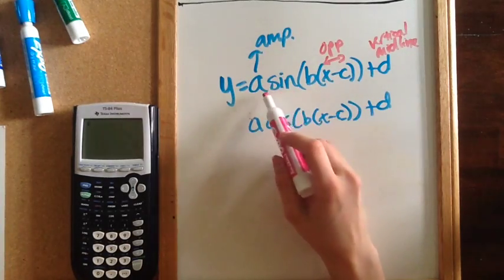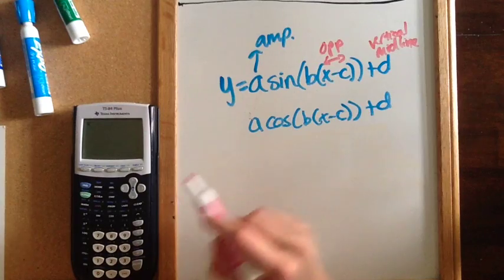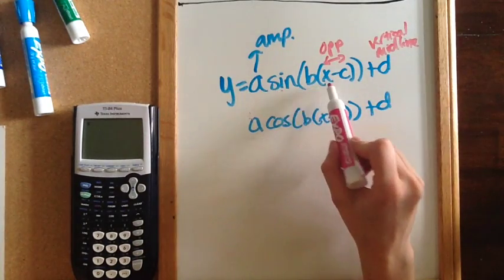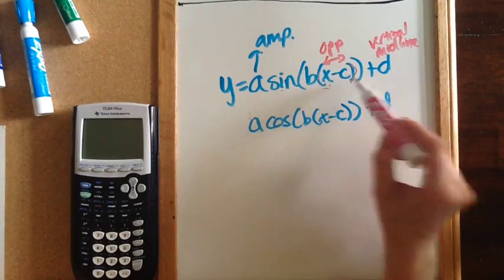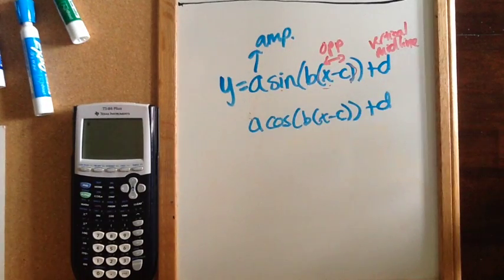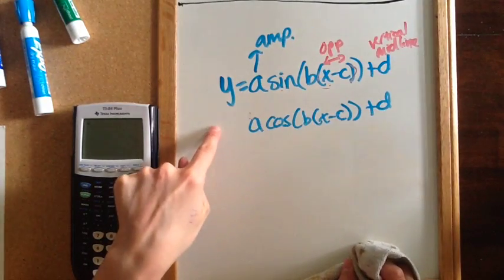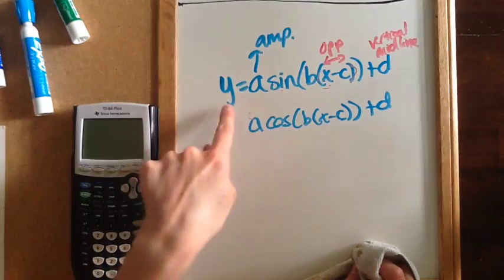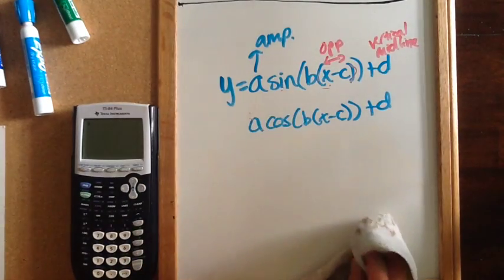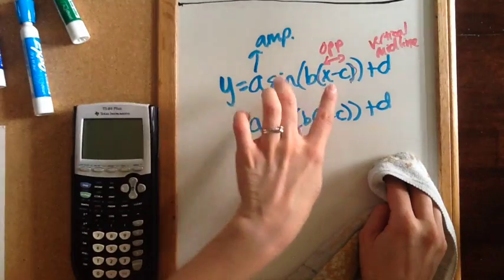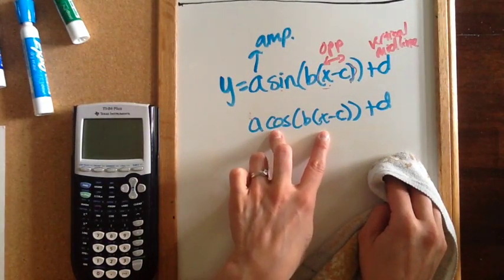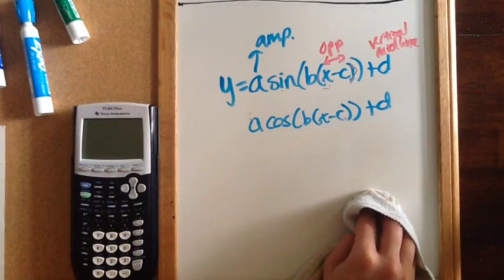It's important to remember that the a value is always multiplied in front of the sine or cosine. The b value is in between the sine and the x or theta. The c value is added or subtracted inside the parentheses, and the d value is added or subtracted outside the parentheses. We can also write it as d plus a cosine, so that distinction matters.